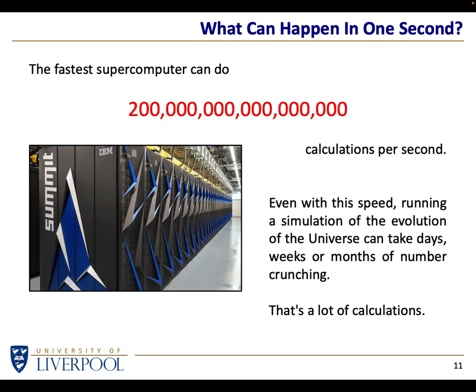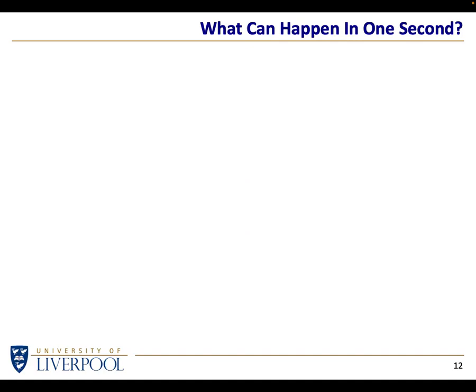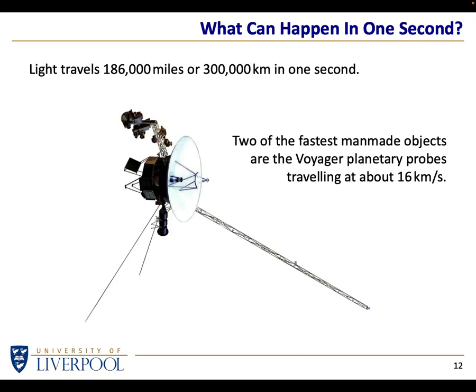Don't take it for granted when you see a simulation of a galaxy or a universe evolving — remember the computing time it took. Light travels 186,000 miles per second or 300,000 kilometres in one second — obviously quite fast compared to the fastest object we've ever launched from Earth. The Voyager probes are now heading towards the nearest stars at something like 16 kilometres per second, which is fast for a man-made object, but trivial compared to light speed. That's why it'll take tens of thousands or hundreds of thousands of years for Voyager to reach the nearest stars.